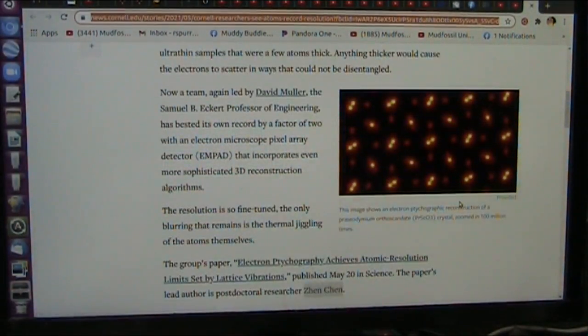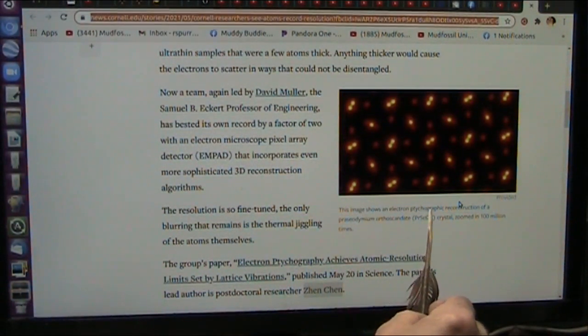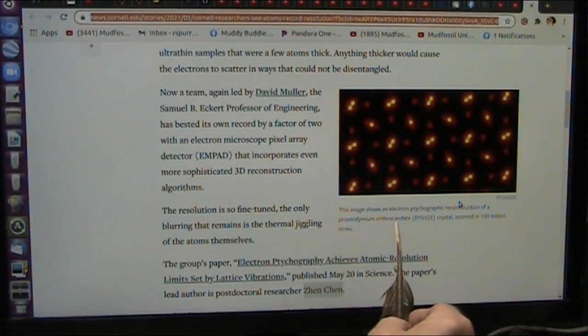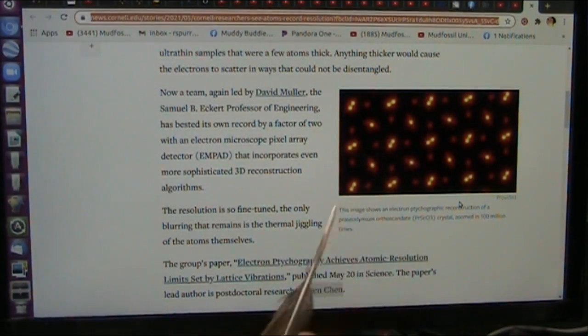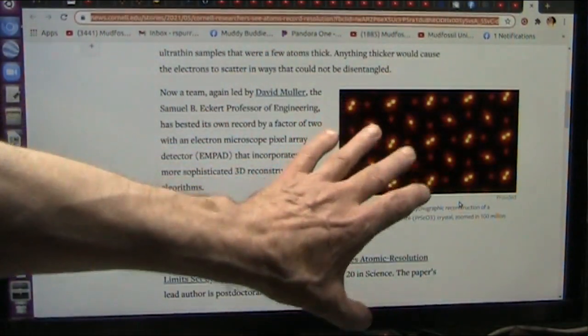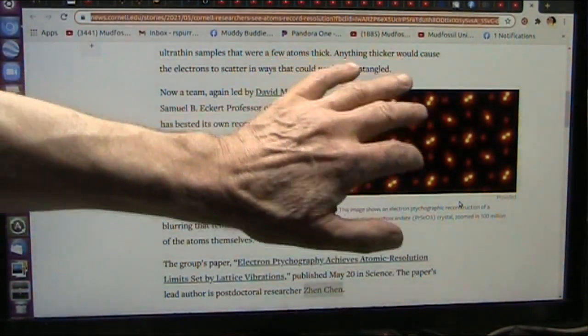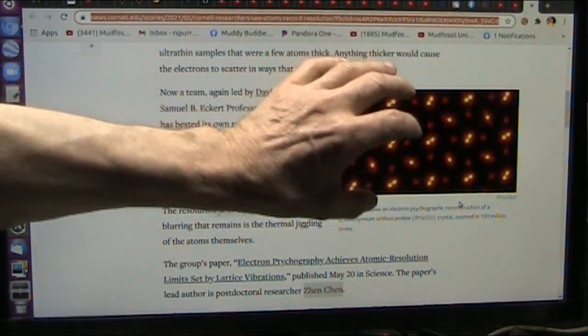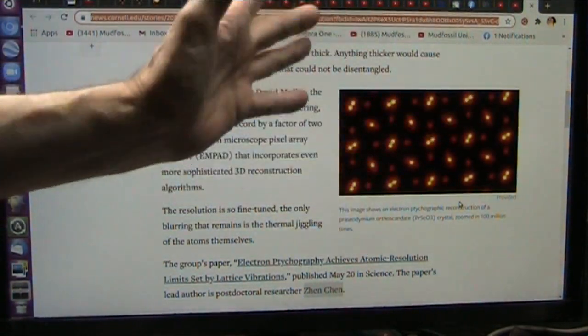Here's what they're doing here. It says this image shows an electron tomograph reconstruction of an orthodontidate, which is PRSCO3 crystal, zoomed in a hundred million times. Now, that crystal's just sitting there, I'm sure. It's taken in some bits of light, so it's being excited to some very tiny degree. So what are we looking at? We're looking at that excitation coming back.